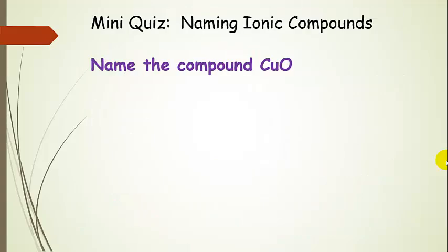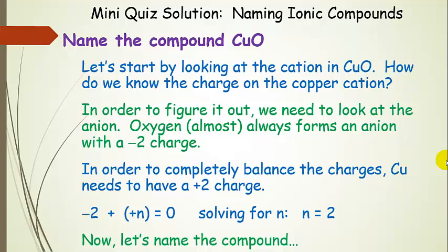Now here's a slightly different one. This one is a little harder because we don't automatically know the charge on copper — we have to do a little thinking. We've identified that we have copper metal, which is a transition metal, and oxygen. Because copper is a transition metal, it can have various different charges. To find out what charge copper has, we look at the anion: oxygen almost always forms an anion with a negative 2 charge — that's a rule we can use.